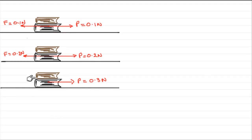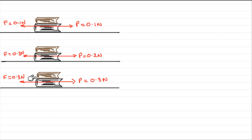Now suppose you start pushing with a force of 0.3 newtons. You increase the force and you find at this point that the books are just about on the point of slipping across the surface. They don't actually move, but you can just feel that they're about to go. The frictional force has got to be exactly the same 0.3 newtons as the forward force. When it reaches this point, we say that it's in limiting equilibrium — it's on the point of sliding.